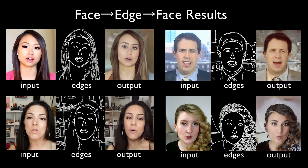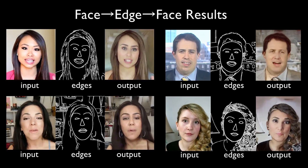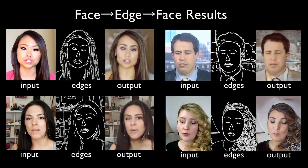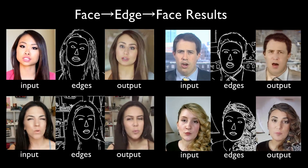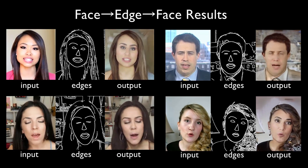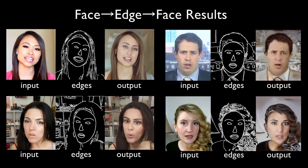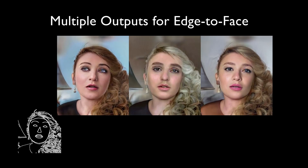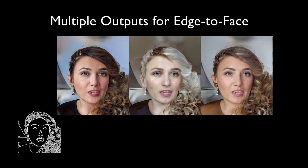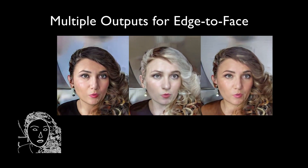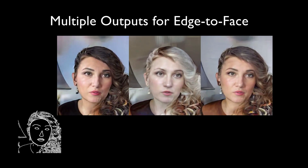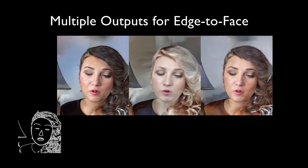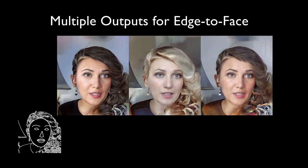For example, our network can transform edge map videos to videos of human faces. Here we show some examples of synthesized people talking. Our network can generate different people speaking given the same input edge maps. Note that the results are temporally consistent from frame to frame.